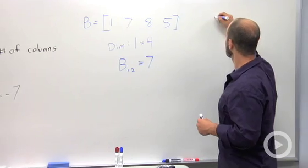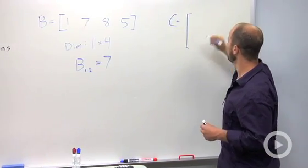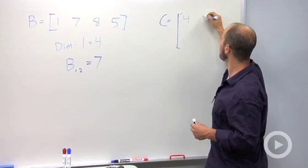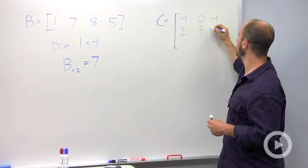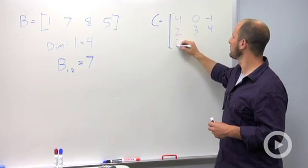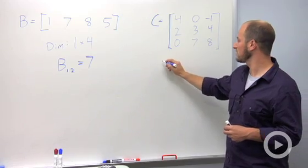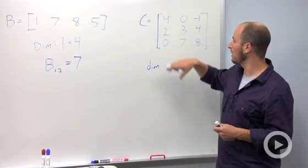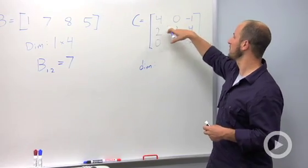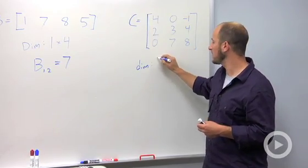One last example, let's talk about matrix C. All right, so another matrix. Dimension of this one - rows by columns, three rows across, three columns down, so this is a three by three square matrix, just because it's the same dimensions either side.